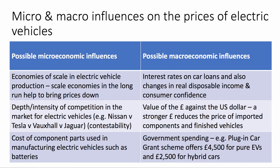Another good micro point is the cost of the component parts used in making electric vehicles. You could take a variable and fixed cost approach here — the batteries, for example, are a major cost in terms of the unit price of an electric car. That's a great example where you could use a supply-side approach with a supply diagram to show that. Then on the macro side, loads of macro variables will affect demand and supply in the market.